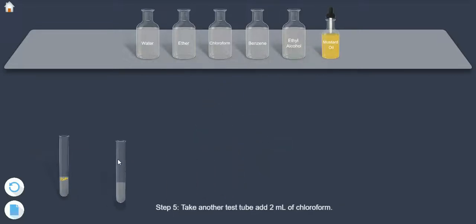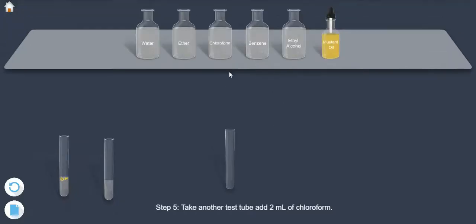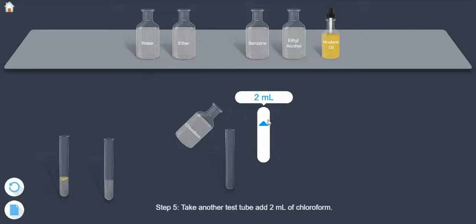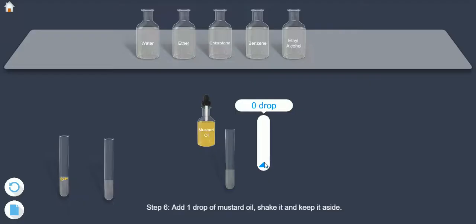Step 5. Take another test tube, add 2 ml of chloroform. Step 6. Add 1 drop of mustard oil, shake it and keep it aside.